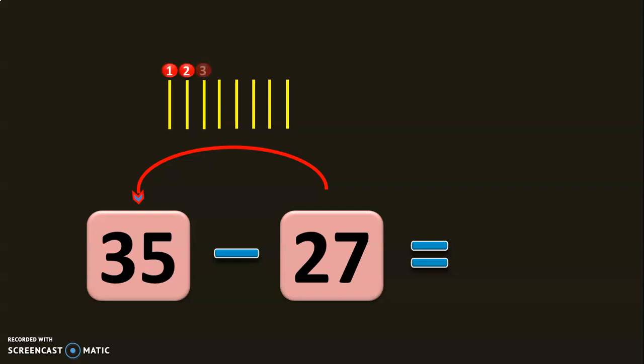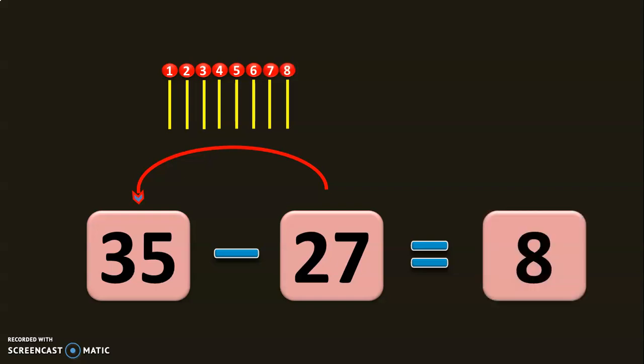So you need 1, 2, 3, 4, 5, 6, 7, 8. 8 numbers to reach 35 from 27. So the subtraction of 35 minus 27 will give you 8.